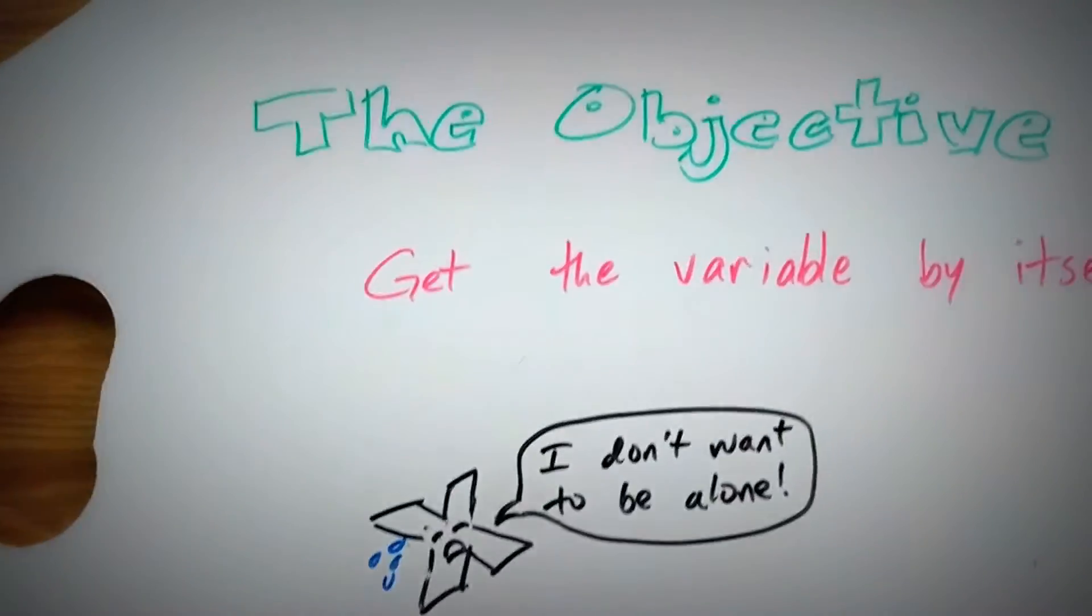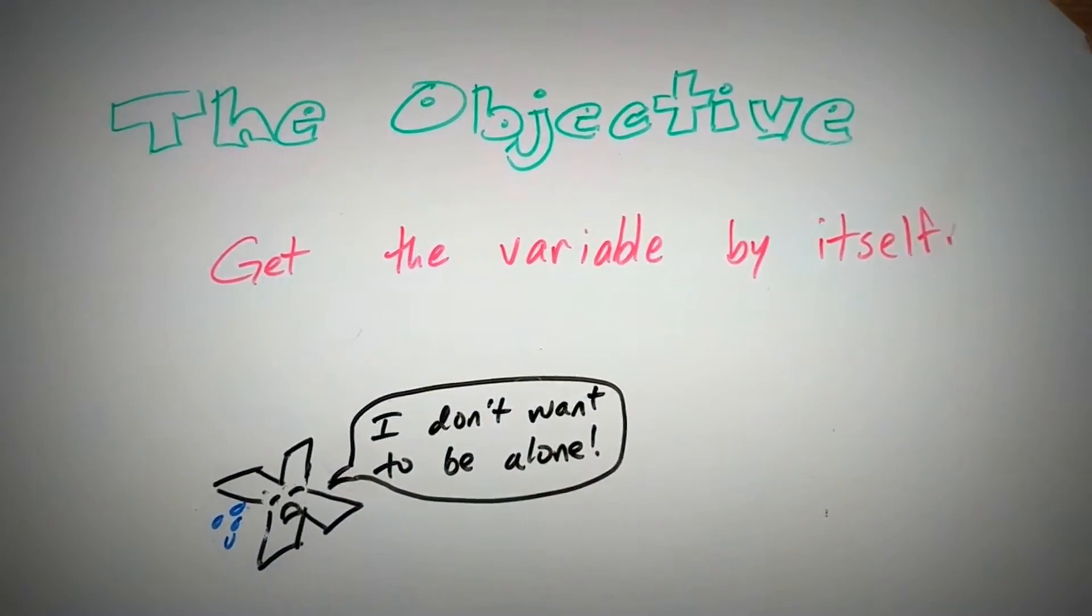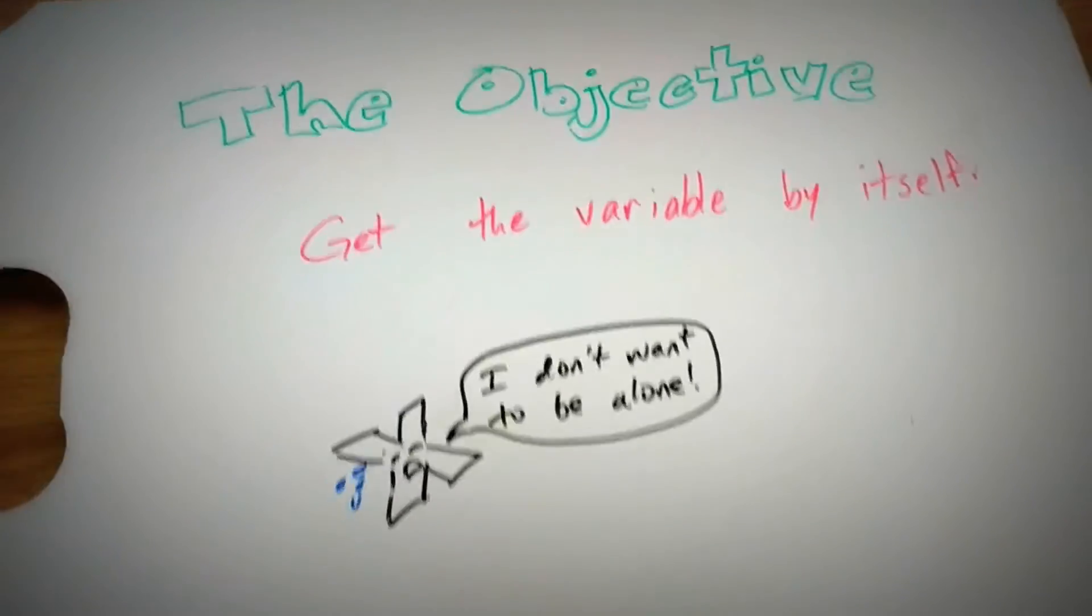Remember, the objective for these is to get the variable by itself. Let's take a look at an example.